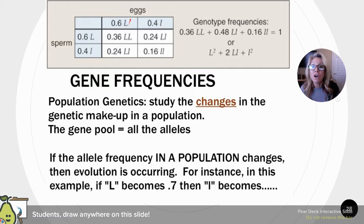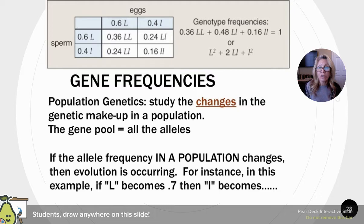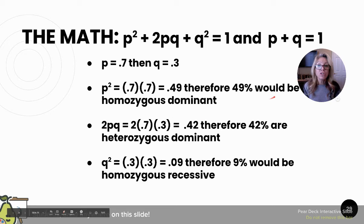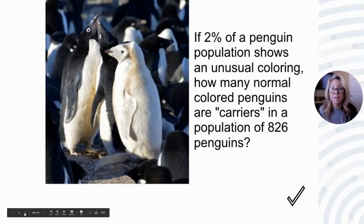In a Punnett square of the population with P = 0.6 and Q = 0.4: the LL combination is P², the two LP combinations are 2PQ, and ll is Q². If the dominant allele frequency changes from 0.6 to 0.7, then Q becomes 0.3, and the results shift: 49% homozygous dominant, 42% heterozygous, and 9% homozygous recessive. Allele frequencies have changed, so evolution is occurring.